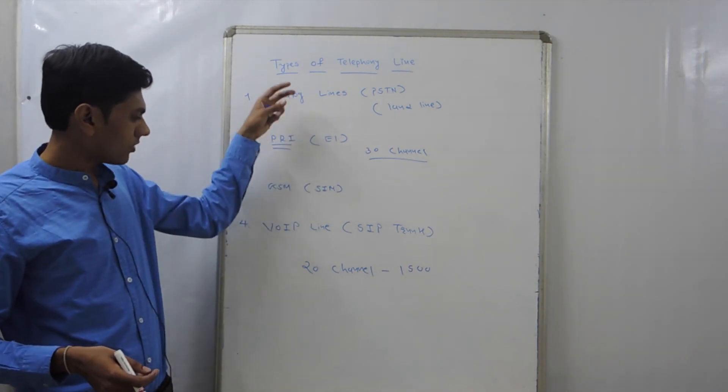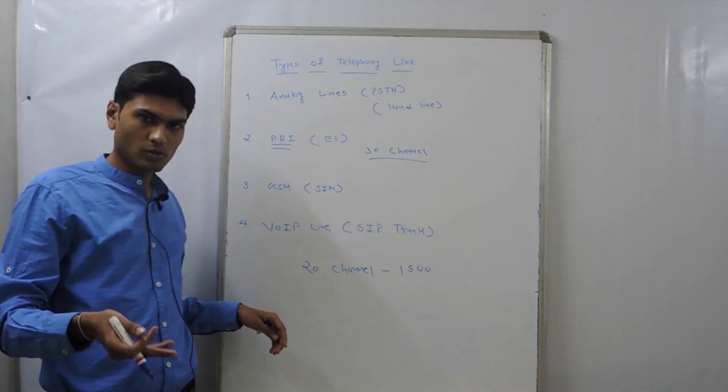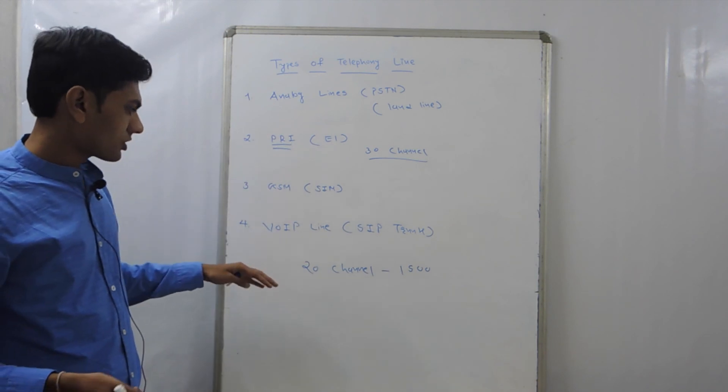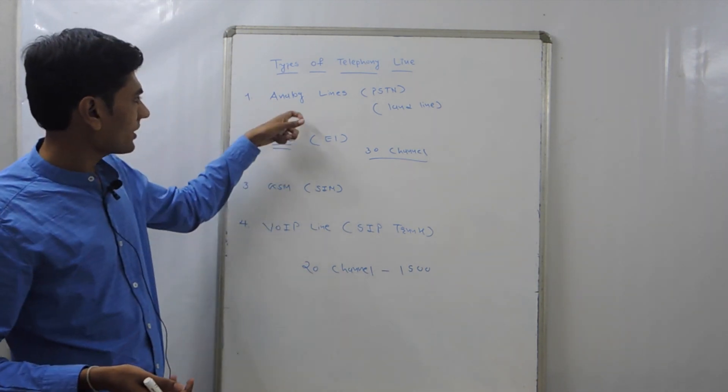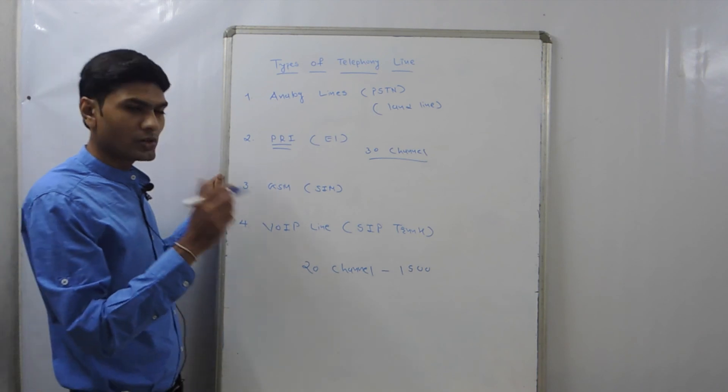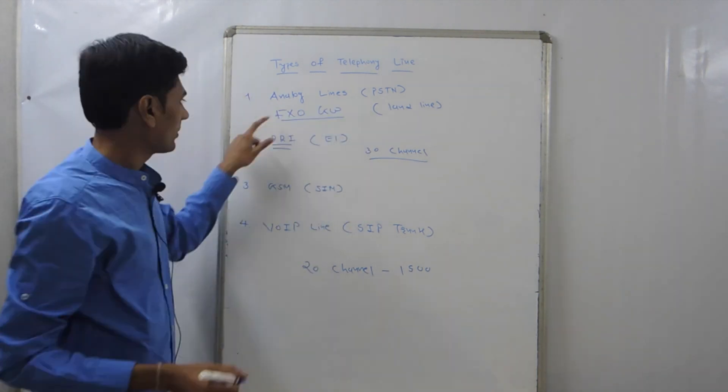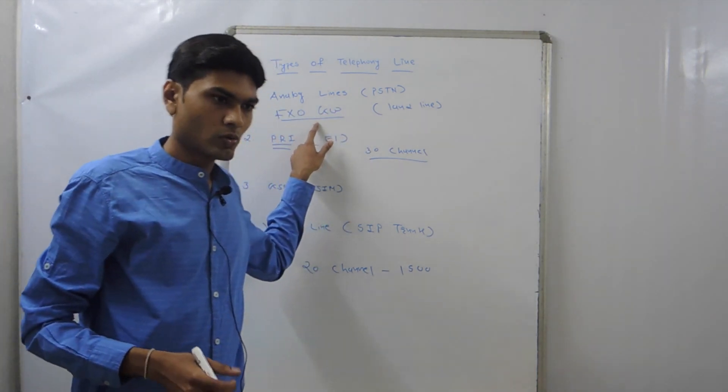Now we try to understand how we connect all these lines to the CNAB server. All four lines are supported in our CNAB server. To connect analog lines, you need to have an FXO gateway for foreign exchange office.